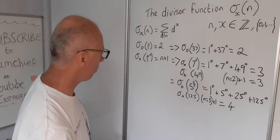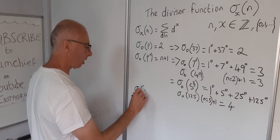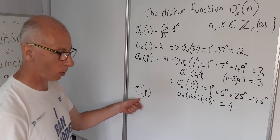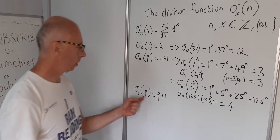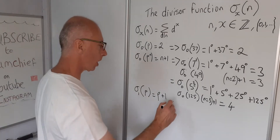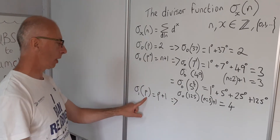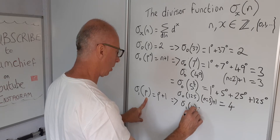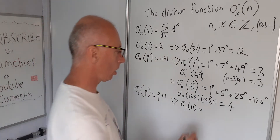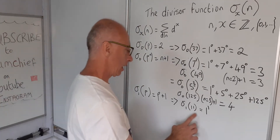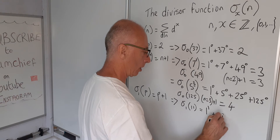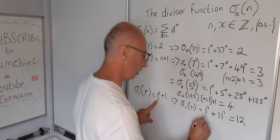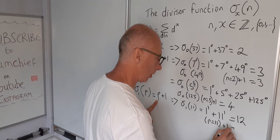Another property: sigma_1(p) = p+1 for any prime p. Let's try sigma_1(11). The divisors of 11 are 1 and 11, each raised to the power of 1, giving 1 plus 11 equals 12. And indeed p+1 = 11+1 = 12.